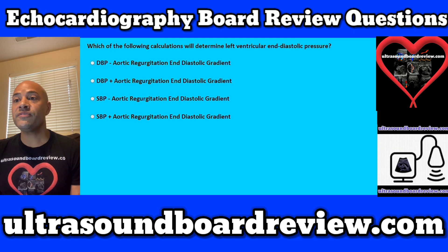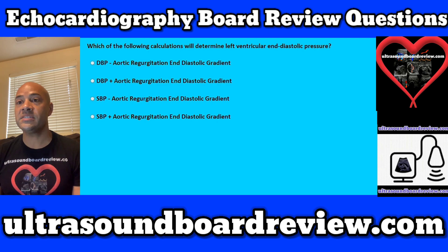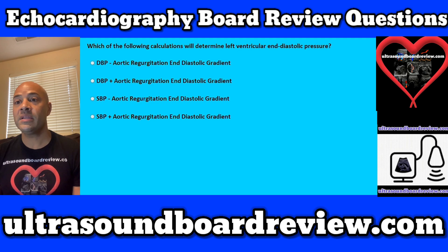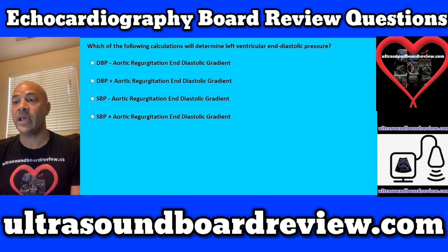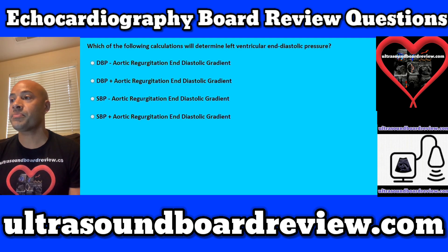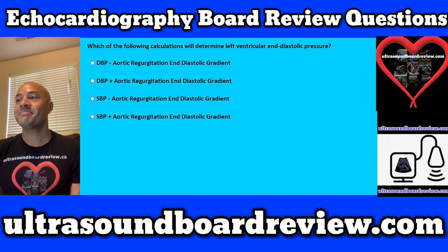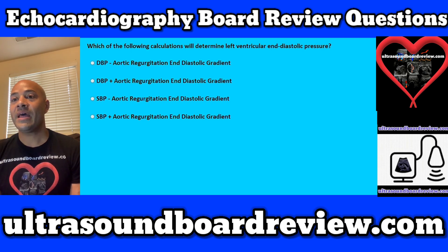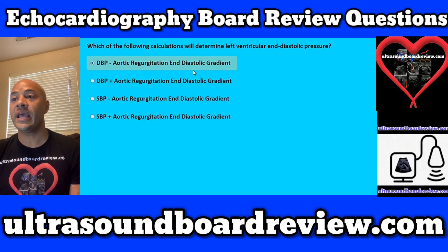Question 31. Which of the following calculations will determine left ventricular end-diastolic pressure? Is it A, diastolic blood pressure minus aortic regurgitation end-diastolic gradient; B, diastolic blood pressure plus aortic regurgitation end-diastolic gradient; C, systolic blood pressure minus aortic regurgitation end-diastolic gradient; or D, systolic blood pressure plus aortic regurgitation end-diastolic gradient? The answer is A, diastolic blood pressure minus aortic regurgitation end-diastolic gradient.